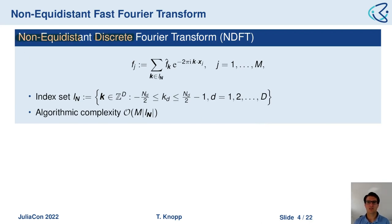These two examples motivate the introduction of what we call the non-equidistant discrete Fourier transform. It is defined such that on the left-hand side you have your time or space signal, and on the right-hand side your Fourier coefficients. The important thing is that x_j can be non-equidistant sampling nodes within the interval minus one-half to one-half, while k is still equidistant. We use a multidimensional formulation where n is the length d-dimensional vector.